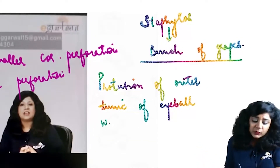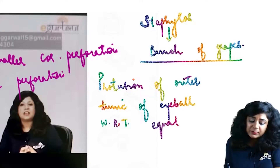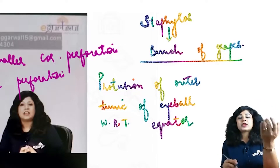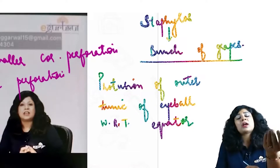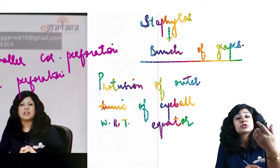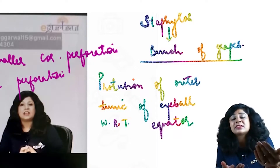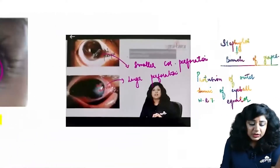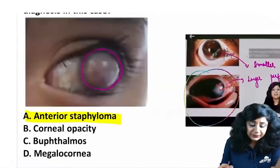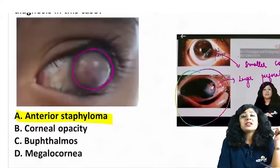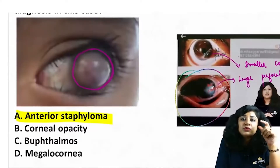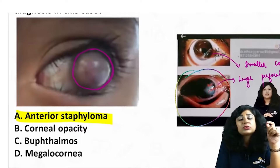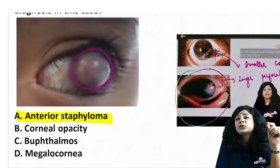Staphyloma is always named with respect to the equator of the eyeball. If it is anterior to the equator, it is anterior staphyloma. If it is posterior to the equator, it is posterior staphyloma. If it is exactly at the equator, it is equatorial staphyloma. The image confirms the answer — you can clearly see the protrusion of the anterior coat, the anterior one-sixth of the outer coat of the eyeball.